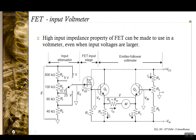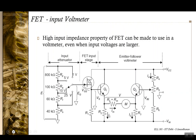For voltmeters requiring high input impedance, it is better to use FET devices instead of transistors, because FET devices provide higher input impedance than transistors. This limits the amount of current drawn by the voltmeter. Instead of transistors, you can use FET devices in a stage that increases the input impedance.